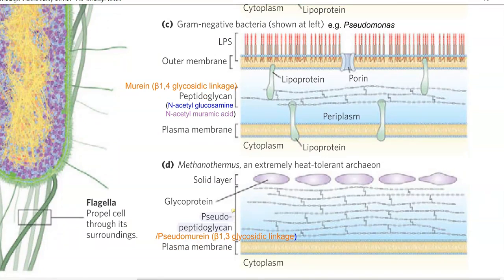The third group shown is Archaea. Living organisms are divided into three groups: bacteria, archaea, and eukaryotes. The Archaea cell wall is commonly referred to by the term pseudopeptidoglycan, also called pseudomurein, whereas the bacterial equivalent is referred to as murein. There are some small differences between them which we will look at now.